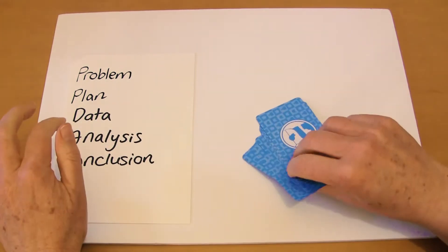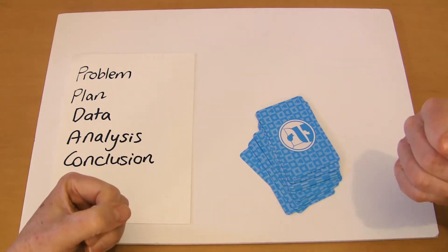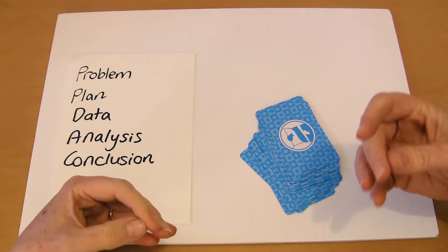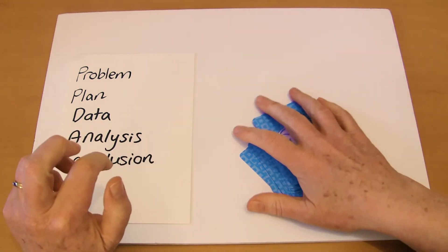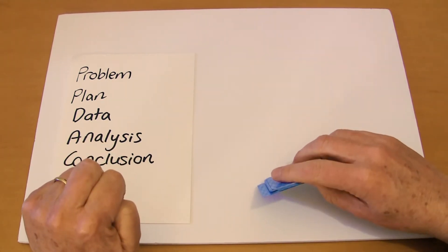So basically you've got some cards and access to cards. You start off with your problem. I wonder how many of my cats are indoor cats or outdoor cats. We make up a plan. I'm going to count, have a look at my cats and see whether they're indoor or outdoor cats.